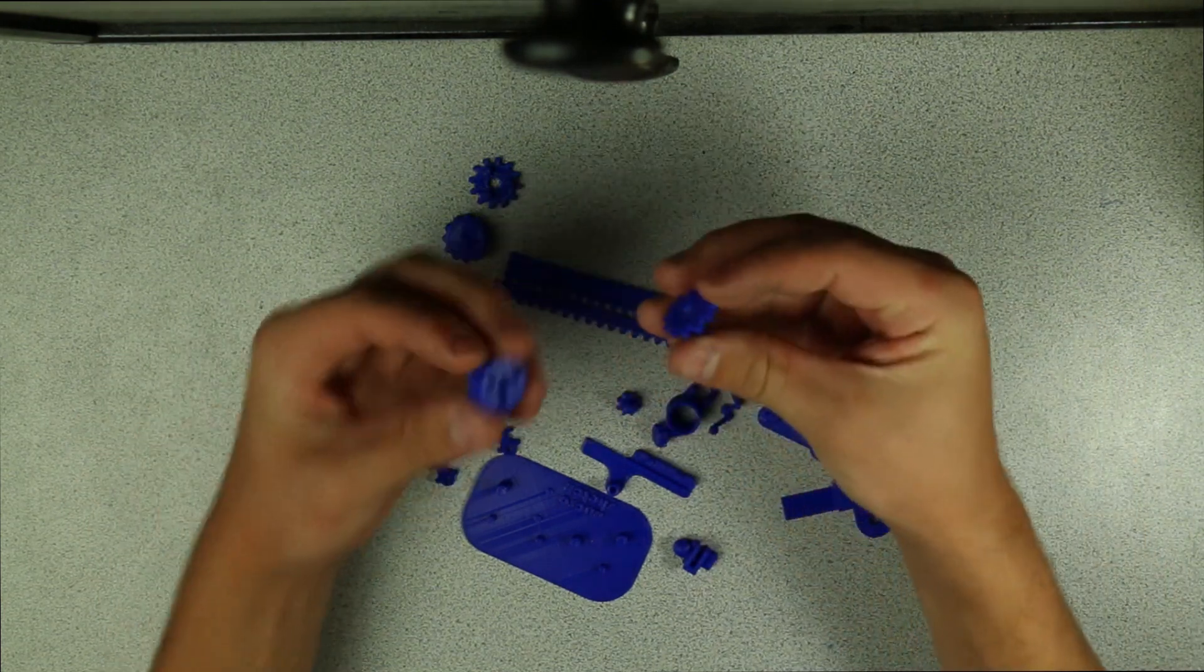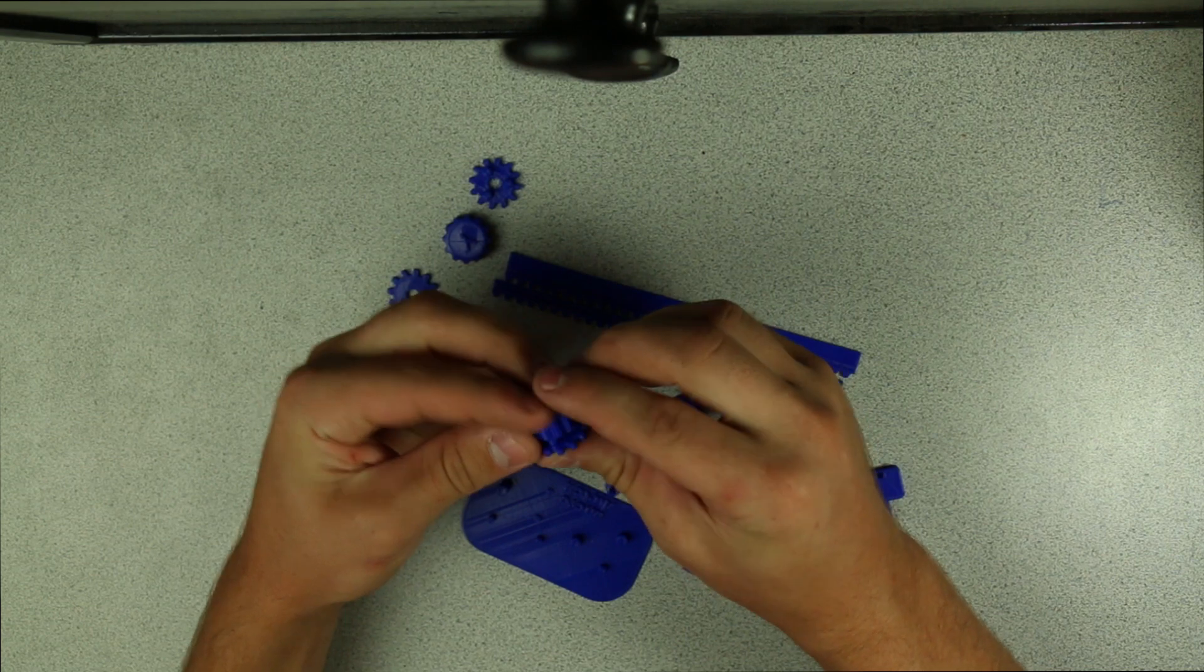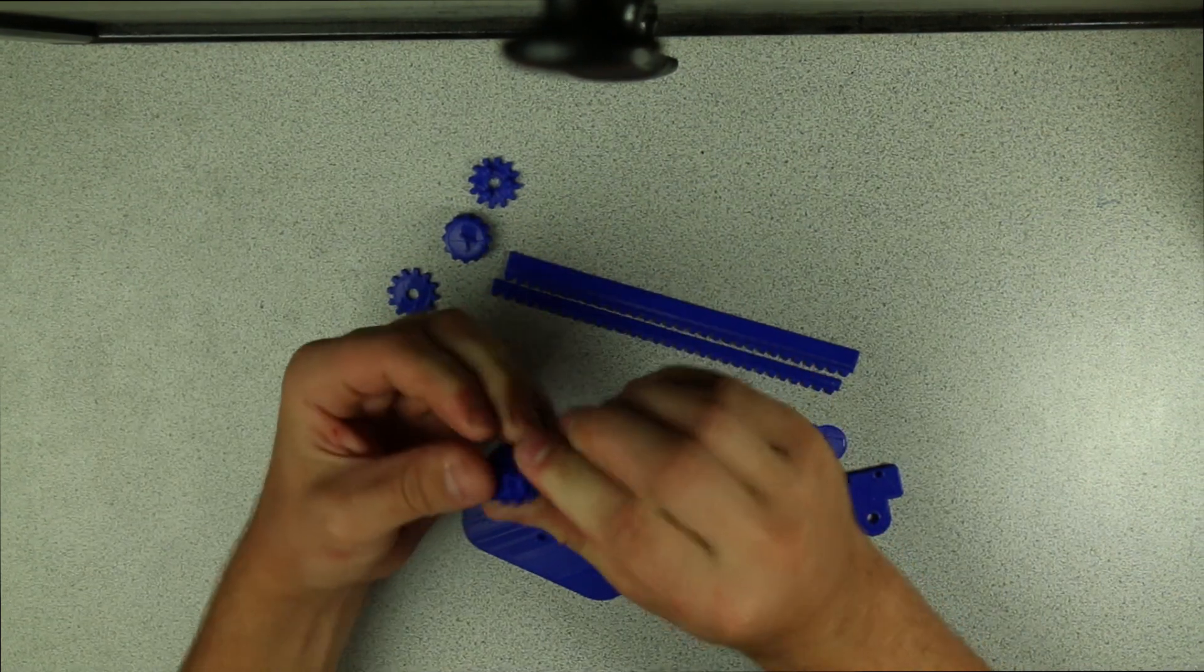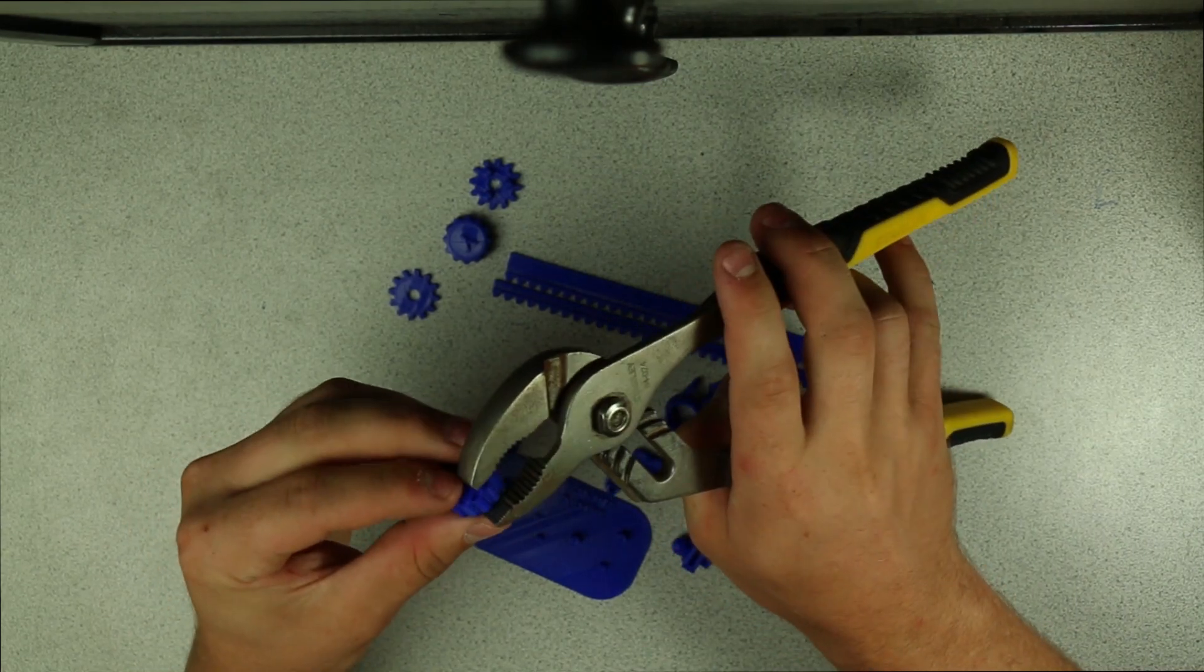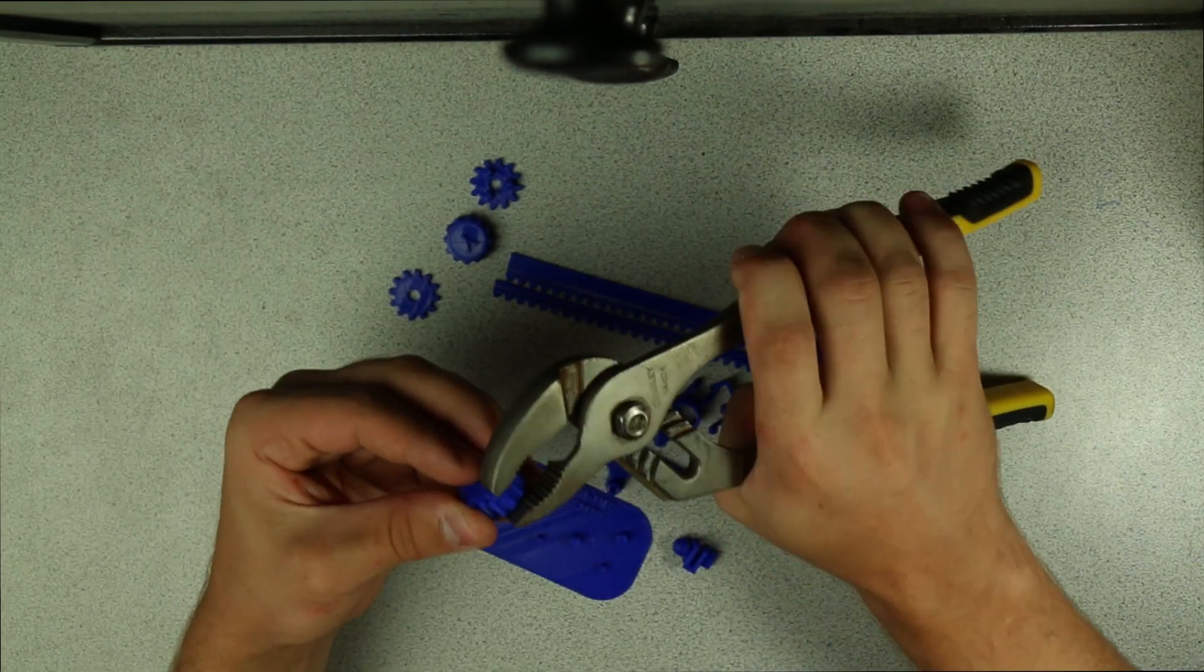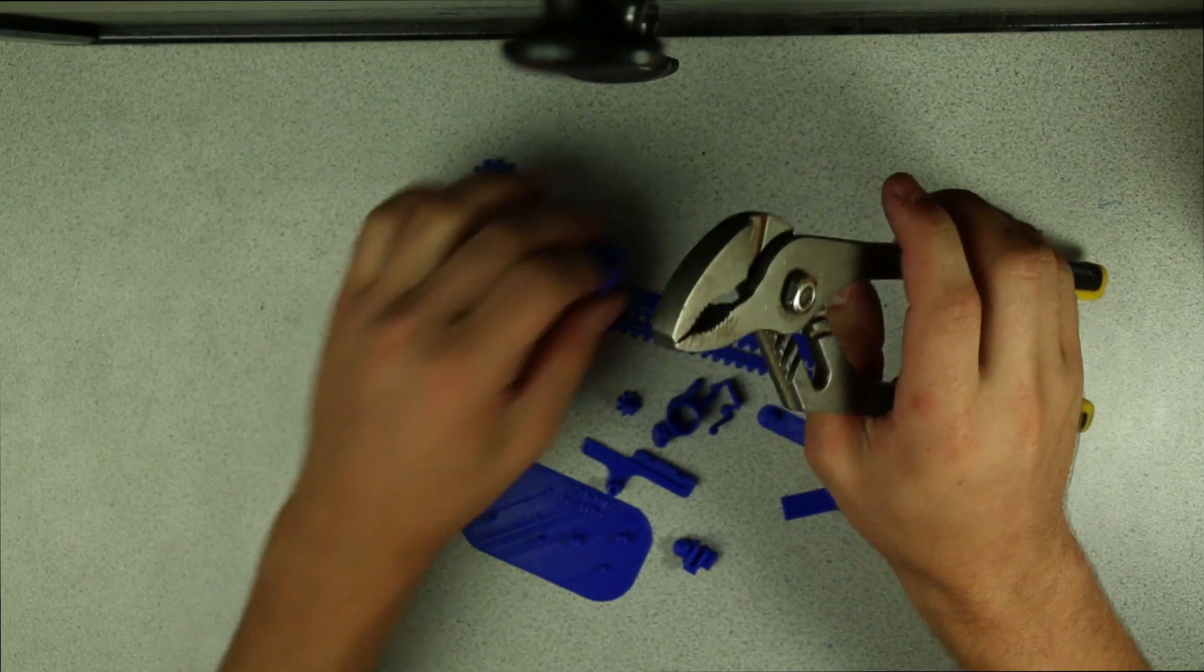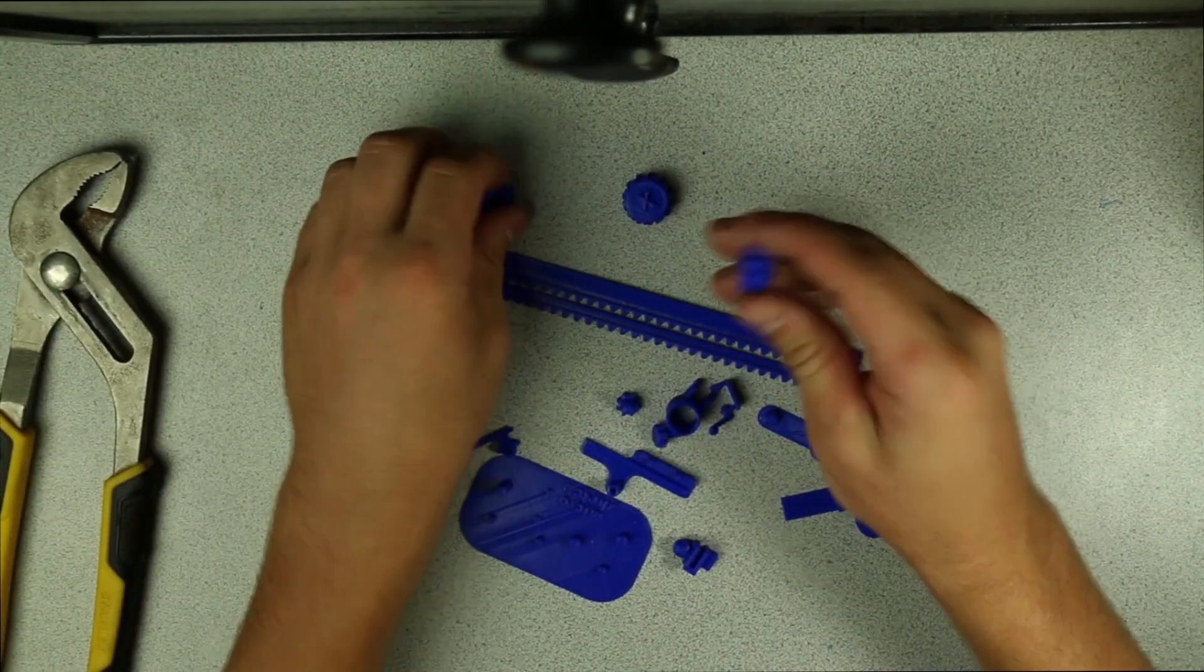So to do that we're going to assemble the two pieces here together which are the gearing mechanisms. Alright, that's looking a lot better, more like it should be, so I'm going to go ahead and assemble the Y button.